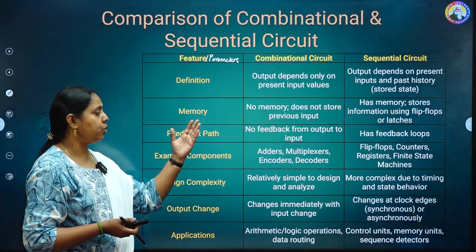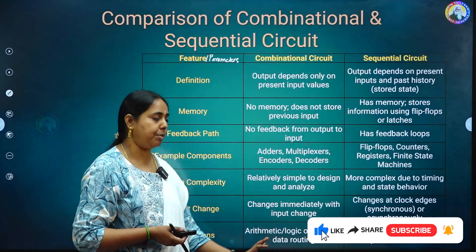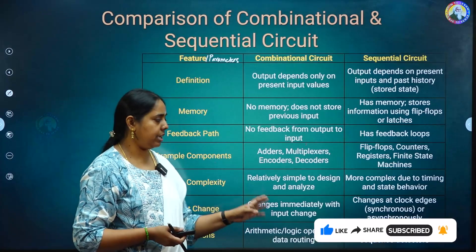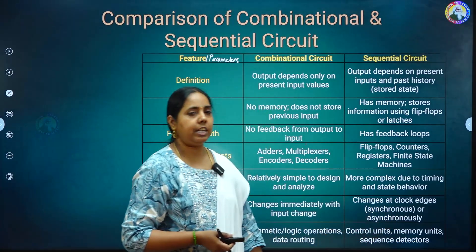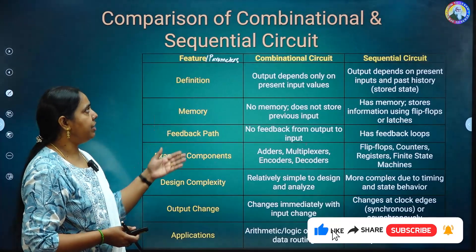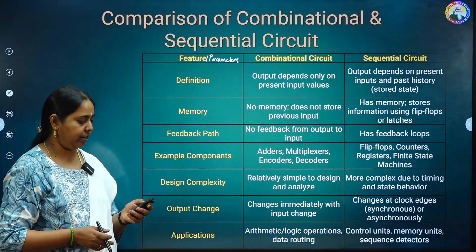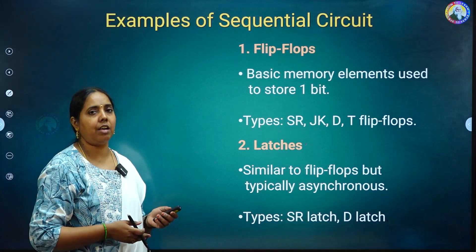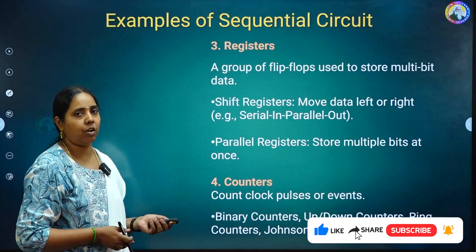Finally, applications: combinational circuits are used for arithmetic operations, logical operations, and data routing. Sequential circuits are used in control units, memory units, and sequence detectors. These are the main parameters that differentiate combinational and sequential circuits. Now we will see the four examples of sequential circuits: flip-flops, latches, registers, and counters.